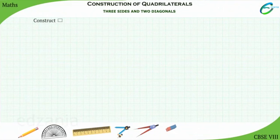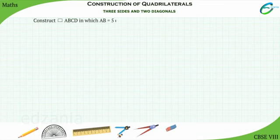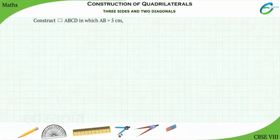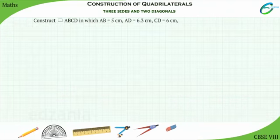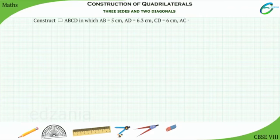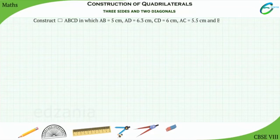Construct a quadrilateral ABCD in which AB is equal to 5 cm, AD is equal to 6.3 cm, CD is equal to 6 cm, AC is equal to 5.5 cm, and BD is equal to 7.1 cm.